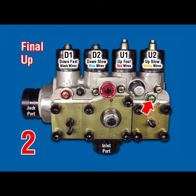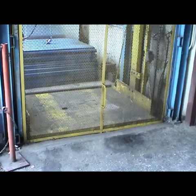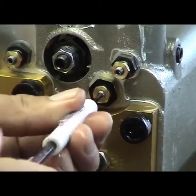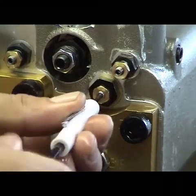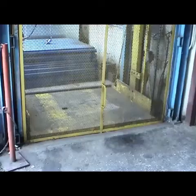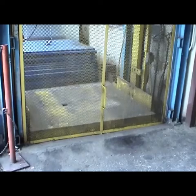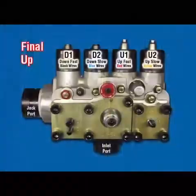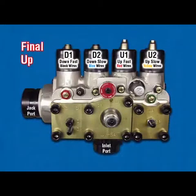UA — Up Acceleration. Car at lower floor with no load. Turn UA counterclockwise two-and-a-half turns from fully closed position. Register an up call and observe up acceleration. Turn UA counterclockwise for faster or clockwise for slower up acceleration. Car should reach full speed in no more than two-and-a-half feet. Do not drag out acceleration.